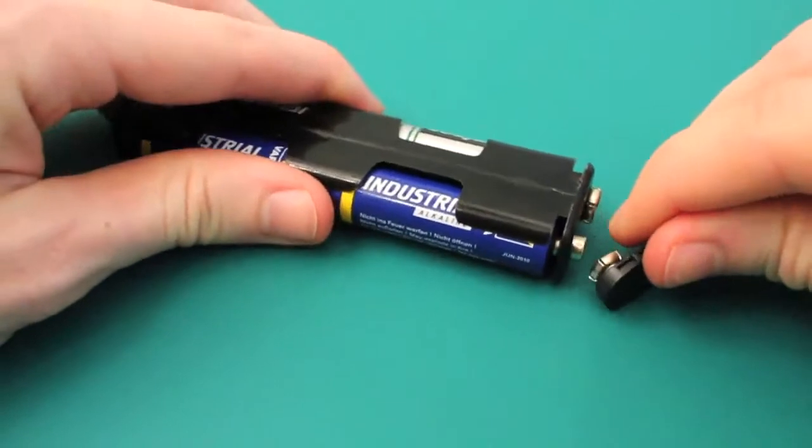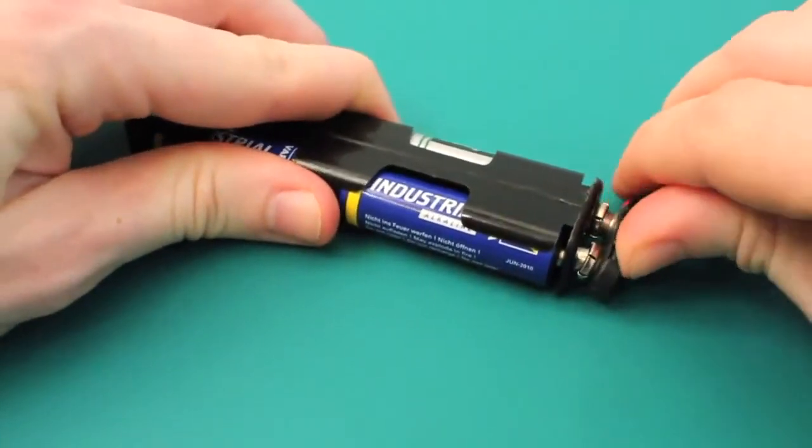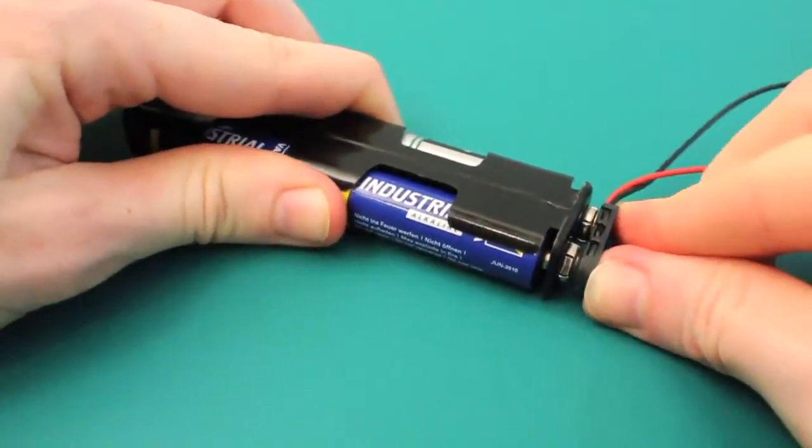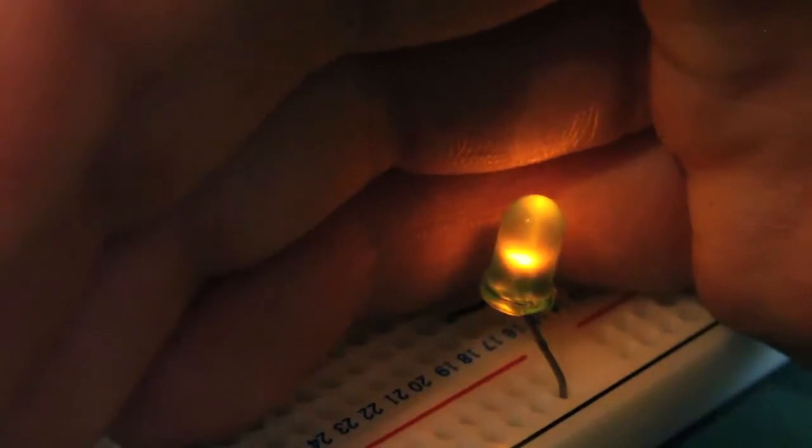Here we have a battery pack which is made up of four AA cells making 6 volts. When we connect this up, we can see that the LED lights.